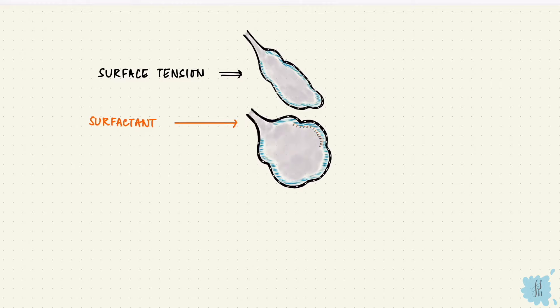So more the surface tension, more likely the alveoli will collapse. So surfactant produced by those type 2 cells lowers surface tension. More surfactant, more compliance. You can check out my video on compliance linked in the description box below.